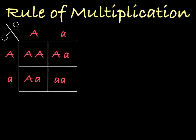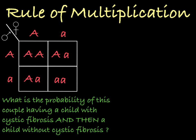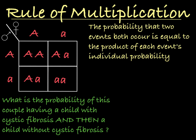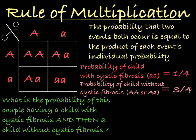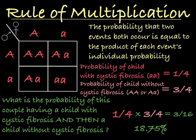Now what if I were to ask: what is the probability of this couple having a child with cystic fibrosis, and then a child without cystic fibrosis? This requires the rule of multiplication, which tells us that the probability of this event happening and this event happening is equal to the probability of this event multiplied by the probability of this event. So in this case, the probability of having a child with cystic fibrosis is one-fourth, and the probability of having a child without cystic fibrosis is three-fourths. So by the rule of multiplication, the probability of having a child with cystic fibrosis and then a child without cystic fibrosis is one-fourth times three-fourths, which is three-sixteenths, or 18.75%.